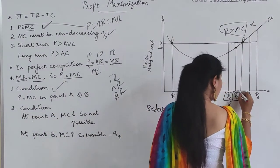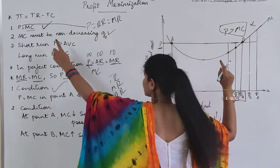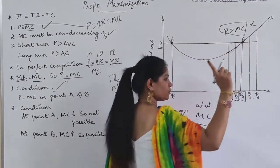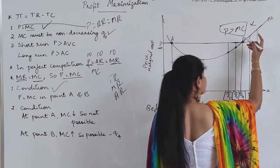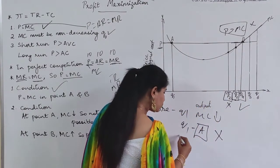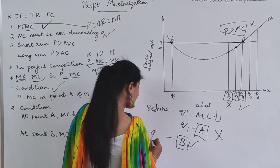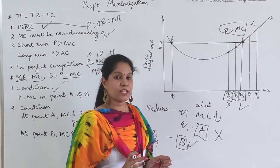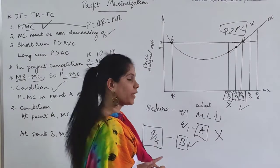Now let's talk about Q4. Q4 is possible because the first condition is fulfilled — P is equal to MC at this point. At the same time, MC is increasing here, not decreasing. So point B satisfies both conditions: P equals MC and MC is increasing (non-decreasing). Therefore, point B is the right point, and Q4 is the quantity a firm should supply to achieve profit maximization.